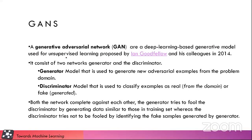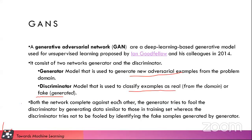GANs are generative models used for unsupervised learning, proposed by Ian Goodfellow in 2014. It consists of two networks: a generator and a discriminator. The generator's job is to generate new adversarial images, and the discriminator's job is to determine whether an image is real or fake. If the image is generated by the generator, it will be labeled as fake for the discriminator. Both networks compete against each other and we get our generator trained.